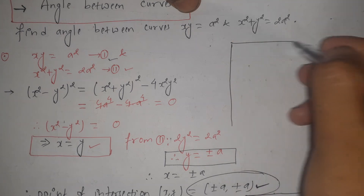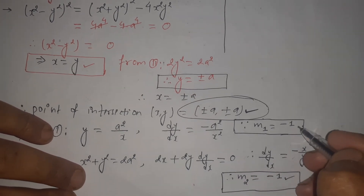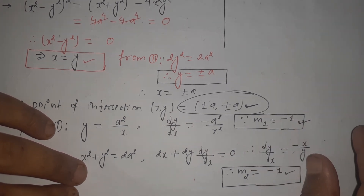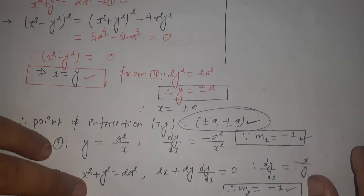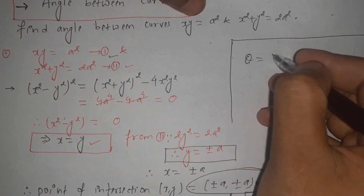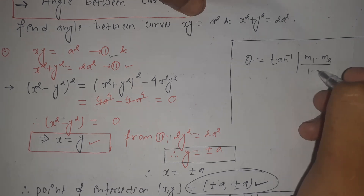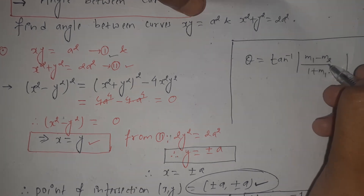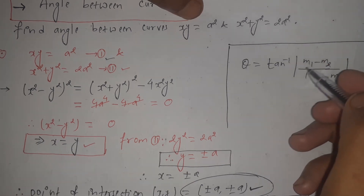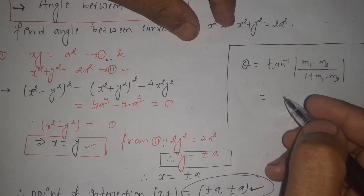Now let's evaluate the angle between the tangents, which gives the angle between the curves. The slopes are equal: m1 = −1 and m2 = −1. Since the slopes are equal, the tangents should be coincident, meaning the angle between them should be 0°. Let's verify using the formula: θ = tan⁻¹|( m1 − m2 ) / (1 + m1·m2)|.